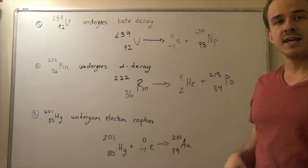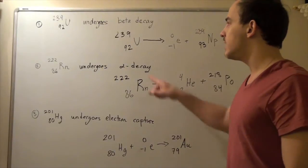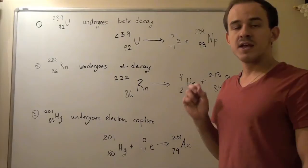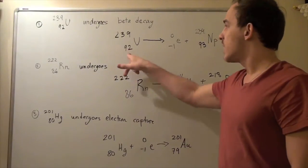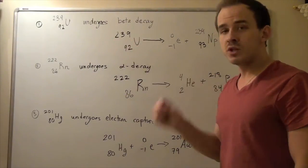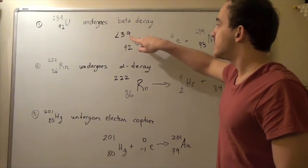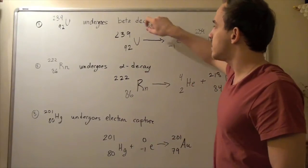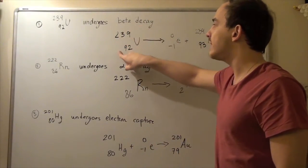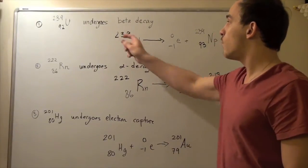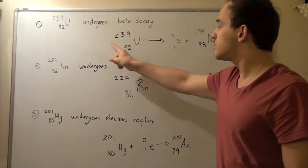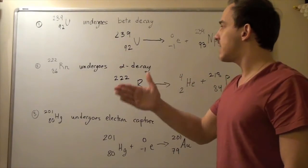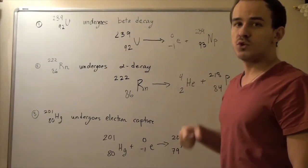Let's look at our beta decay reaction. In this example, we begin with one reactant. Our reactant is a single uranium atom that has 92 protons and 239 nucleons. Since we have 239 nucleons, to find the number of neutrons, we subtract 239 minus 92, and that gives us 147. So we have 147 neutrons, 92 protons, and 147 plus 92 gives us the number of nucleons.